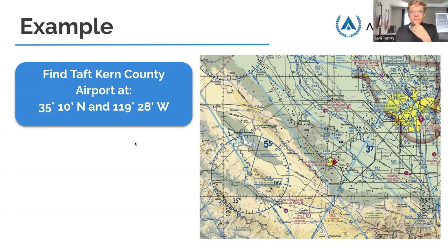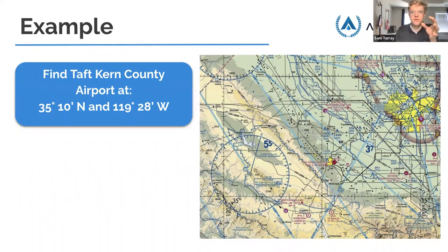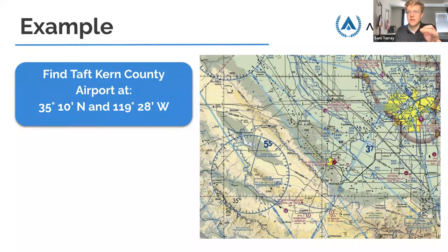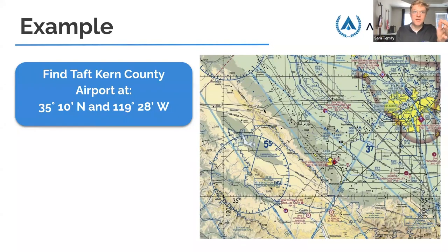It can be a little confusing at first but don't let it bother you. Coming back to the example: 35 degrees north — find the big number first. Here's 35, and then 10 minutes: count one, two, three, four, five, six, seven, eight, nine, ten — ten is the big mark. So we know the airport is somewhere along this line. And if you jumped ahead, you can already see Taft Kern County Airport right there. These questions are straightforward — you didn't even need to do the longitude to narrow it down.